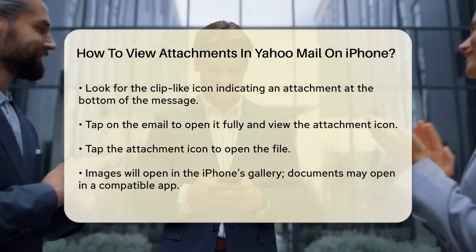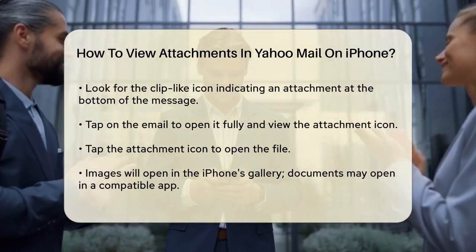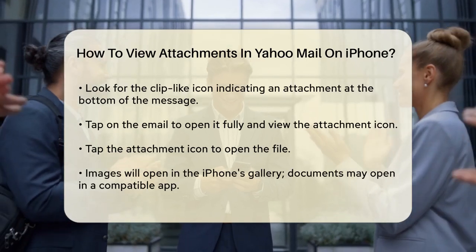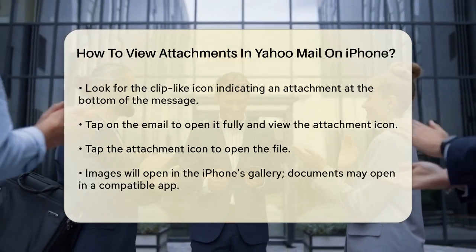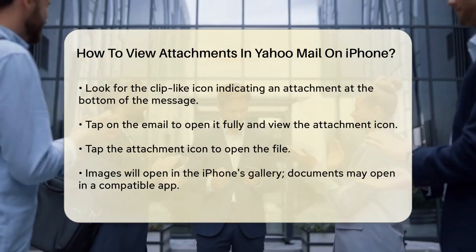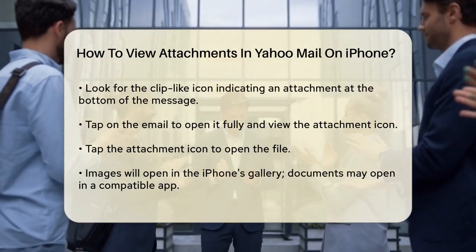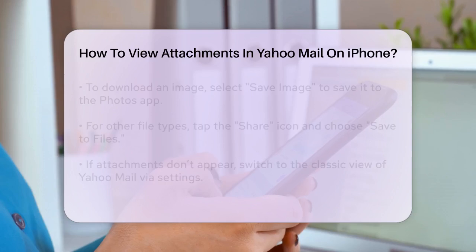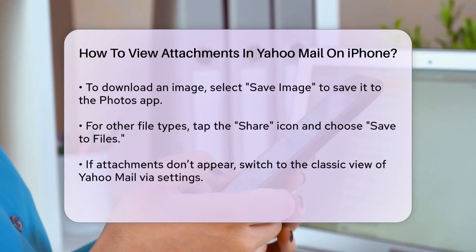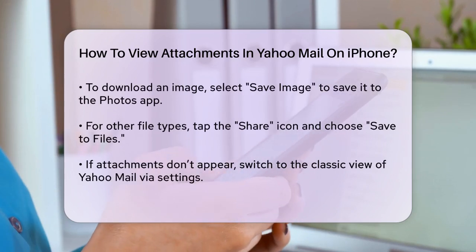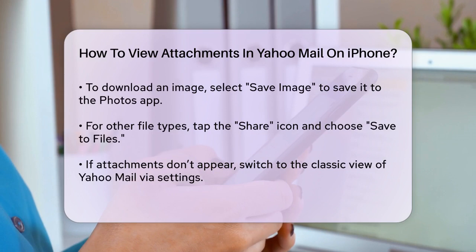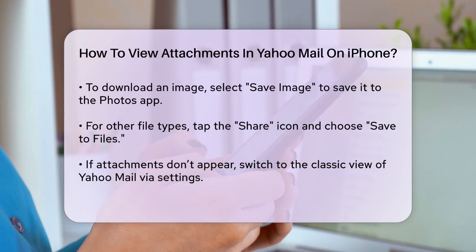To download the attachment, you have a few options. If it's an image, you can save it directly to your Photos app by tapping the Save Image option. For other types of files, tap the Share icon, then choose Save to Files to save it to your iPhone's Files app.